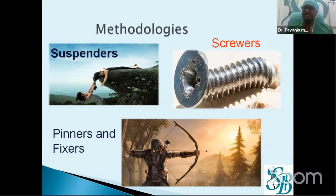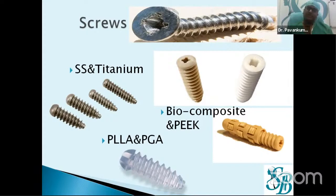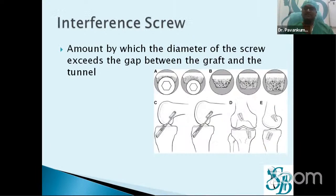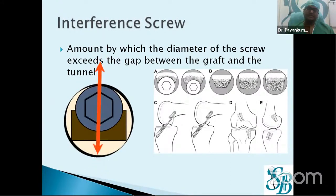In terms of methodologies, we have suspenders, screws, pinners, and fixers. Screws can be titanium — stainless steel is now obsolete — or bio screws: earlier generations were PLA and PGA (polyglycolic acid and polylactic acid), and now we have biocomposite and PEEK screws. What an interference screw does is occupy space in the tunnel — the diameter by which the screw exceeds the tunnel fills the gap between the graft and the tunnel wall, pushing the graft against the tunnel.